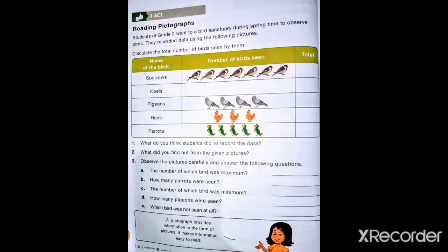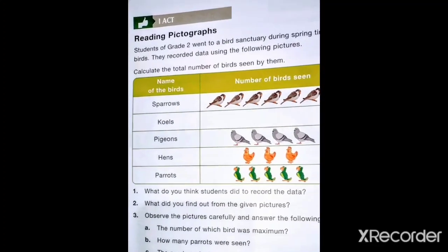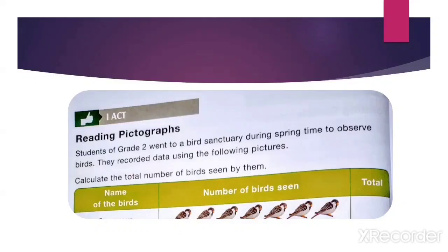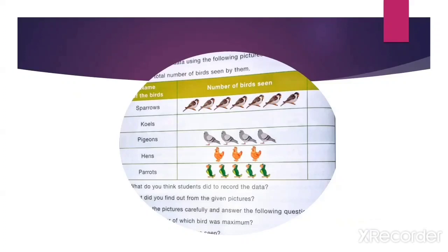Now children, open page number 44 in your maths textbook and solve this page with me. See the heading — Reading Pictograph. Students of grade 2 went to a bird sanctuary during spring time to observe birds. Children, here 'sanctuary' means a nature reserve. They recorded data using the following pictures. Calculate the total number of birds seen by them. Here, the names of birds are given along with the number of birds seen by them. We have to find out the total number of birds seen.